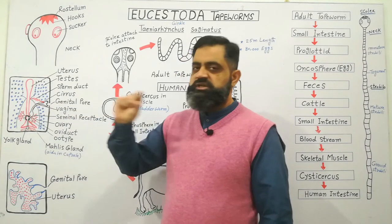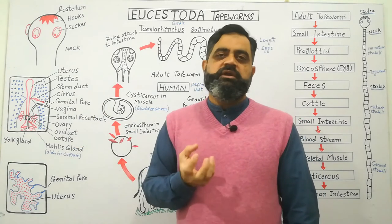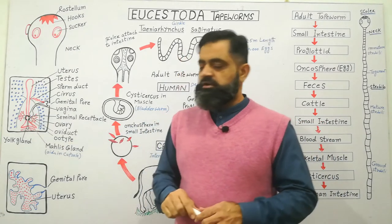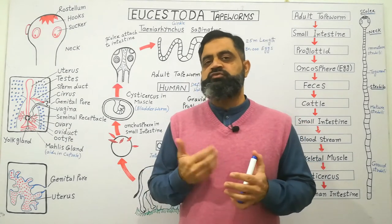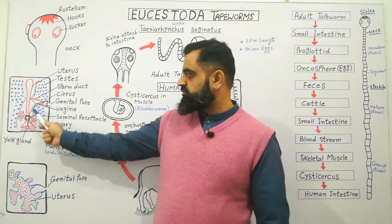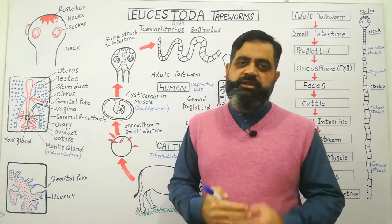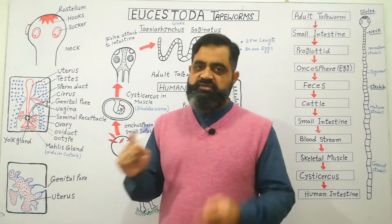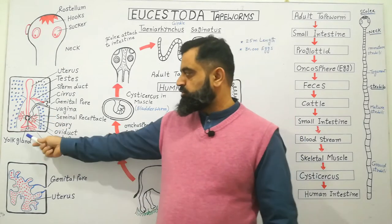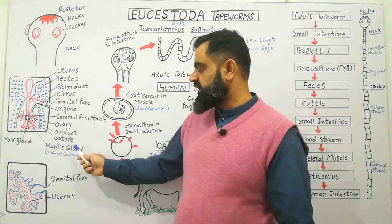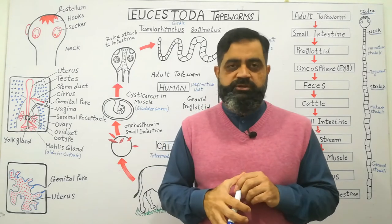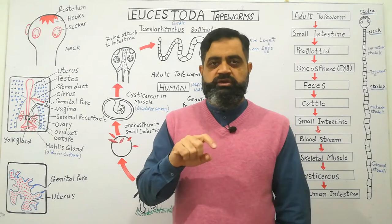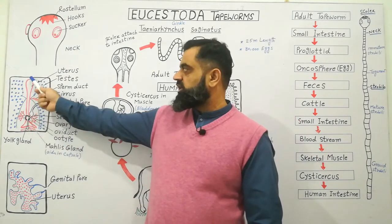The transferred sperm enter the genital pore and are transported into the vagina, which opens into a wider region known as the seminal receptacle. The seminal receptacle stores the sperm of the other tapeworm. Male gametes mature first and then female gametes mature later. Once sperm are stored in the seminal receptacle and eggs are matured in the ovary, eggs are transferred to the otype where fertilization occurs, yolk is deposited by the yolk gland, and Mehlis' gland forms a protective capsule around the egg.